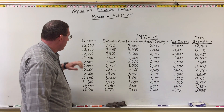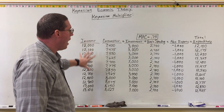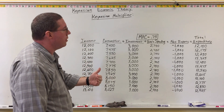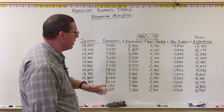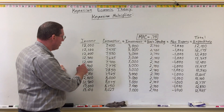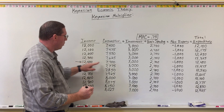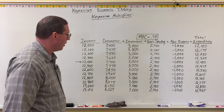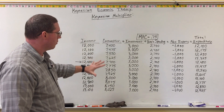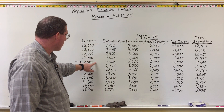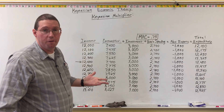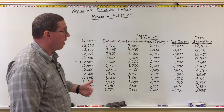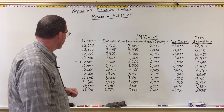What we identified was that these are a whole bunch of possible situations, and that only one of them is really going to occur in the actual economy — it's going to be the one where income is equal to total expenditure. So given this information about the economy, this particular economy is going to be at 12,400, or in the case of the United States, 12.4 trillion dollars, or 12,400 billion dollars.